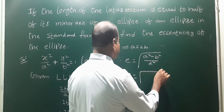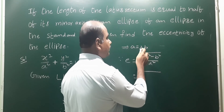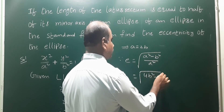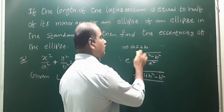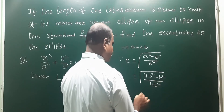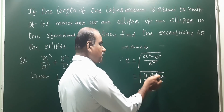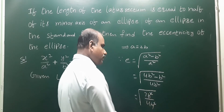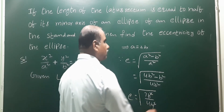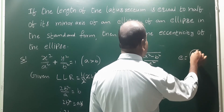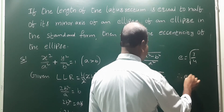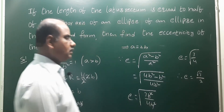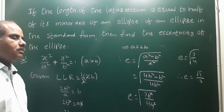Since eccentricity standard formula: e equals square root of a² minus b² by a². Substituting a = 2b: that gives 4b² minus b² by a², which is 3b² by 4b². Cancel b² and b², giving square root of 3 by 4. So e is equal to square root of 3 by 4, which equals root 3 by 2. Therefore eccentricity is equal to root 3 by 2 — that is the answer.